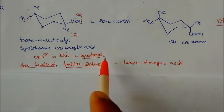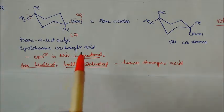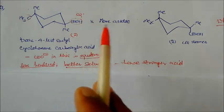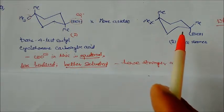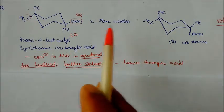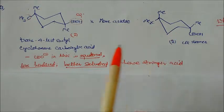It is less hindered, so it can be better solvated. This is more hindered, so it will be less solvated. That's why this is more acidic, and this is less acidic in nature.